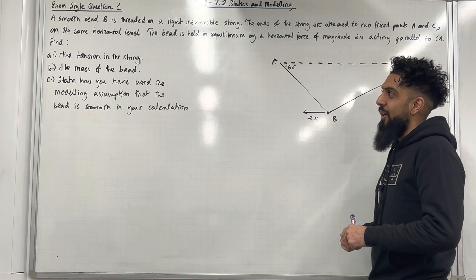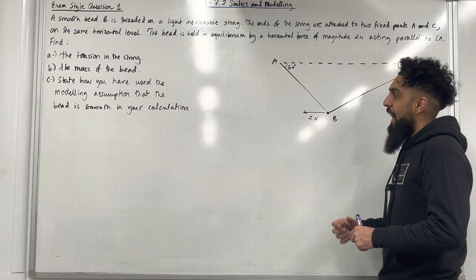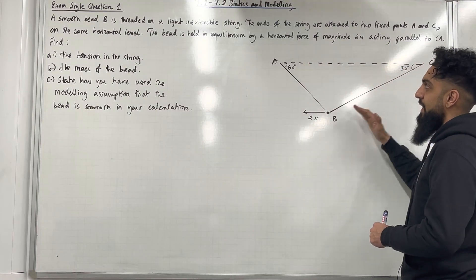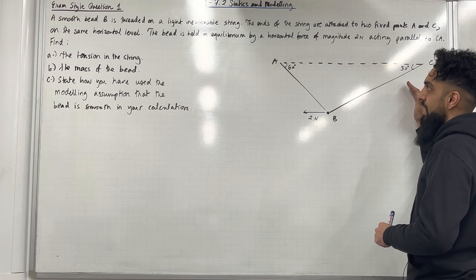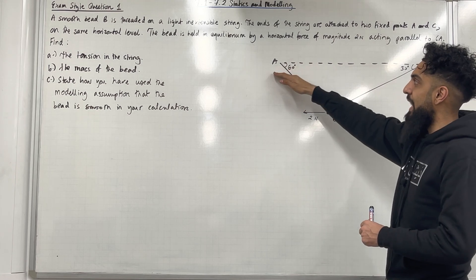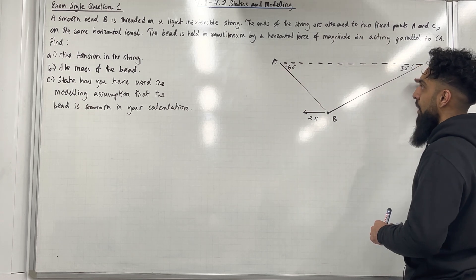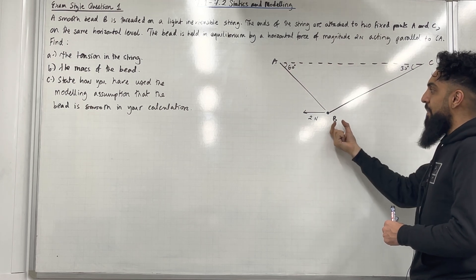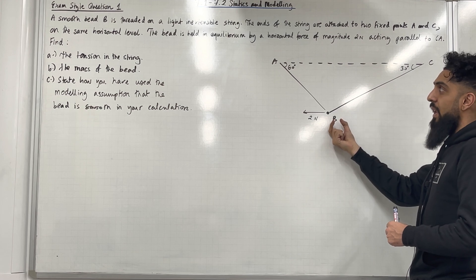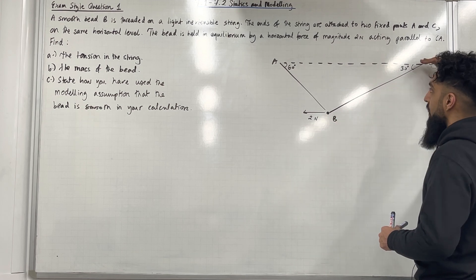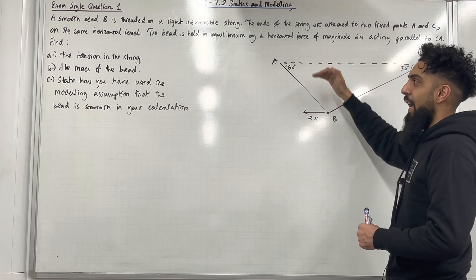Here is exam style question 1. A smooth bead is threaded on a light and extensible string. The ends of the string are attached to two fixed points A and C on the same horizontal level. The bead is held in equilibrium by a horizontal force of magnitude 2 newtons acting parallel to CA.